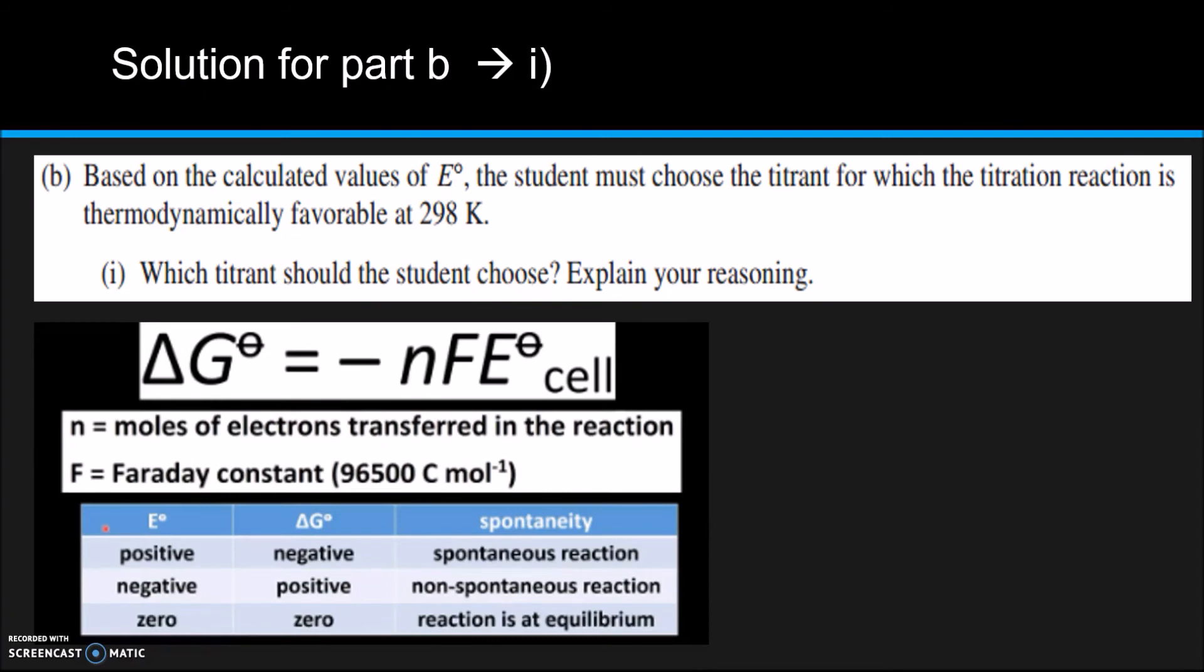This one, ΔG° equals negative nFE°, where n is the moles of electrons transferred in the reaction, F is Faraday's constant, and E is the value we've calculated. So this table kind of shows you that if E is positive, then ΔG is going to be negative, which means it's going to be spontaneous or thermodynamically favored.